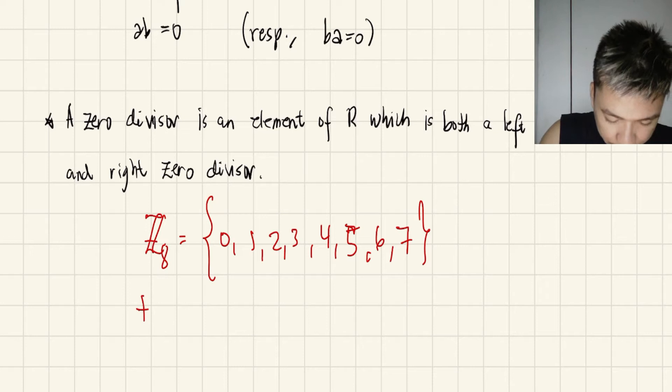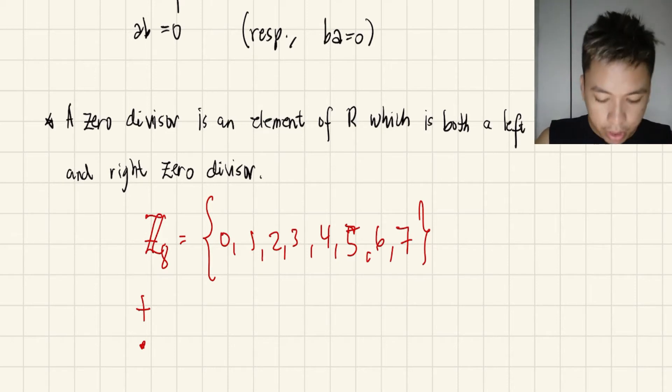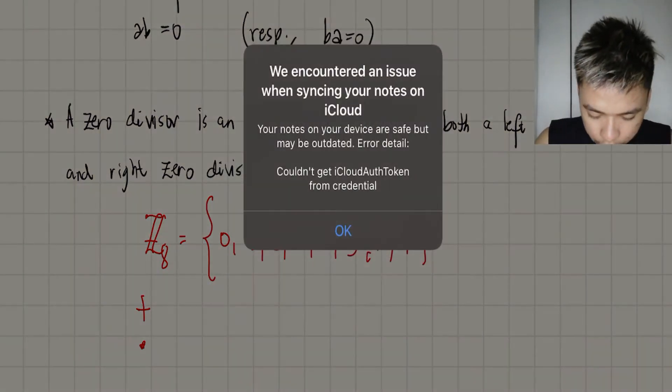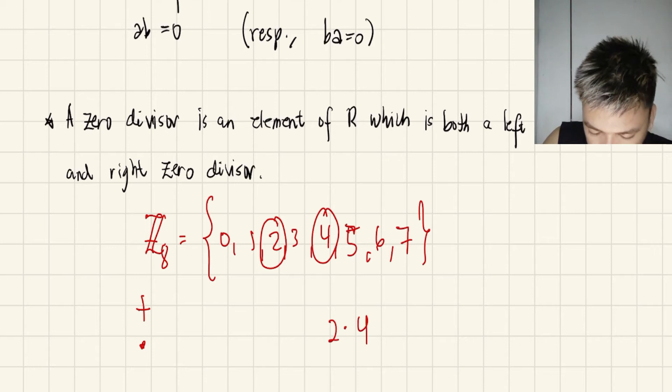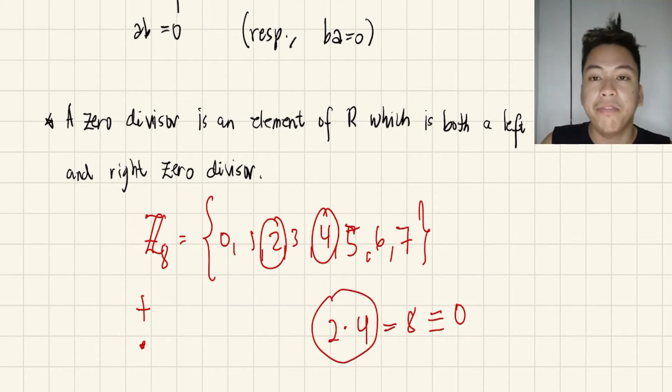This operation refers to addition modulo 8, and this represents multiplication modulo 8. If we are going to evaluate, let's say we pick 2 and 4 here. If you multiply 2 and 4, you get 8, and that's congruent to zero. So meaning that since the product of 2 and 4 results to zero, then 2 and 4 are zero divisors.